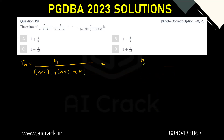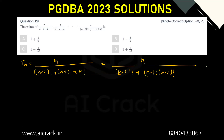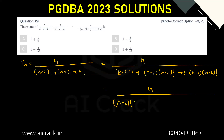So this becomes n upon n minus 2 factorial plus n minus 1 multiplied by n minus 2 factorial, basically writing n minus 1 factorial as n minus 1 multiplied by n minus 2 factorial. This can also be written with n minus 1 times n minus 2 factorial, and we can take n minus 2 factorial as common.